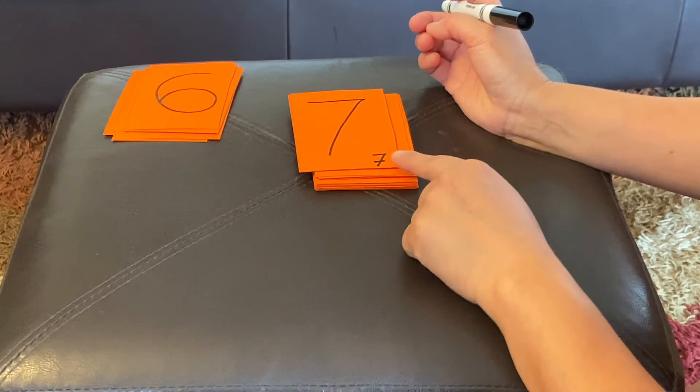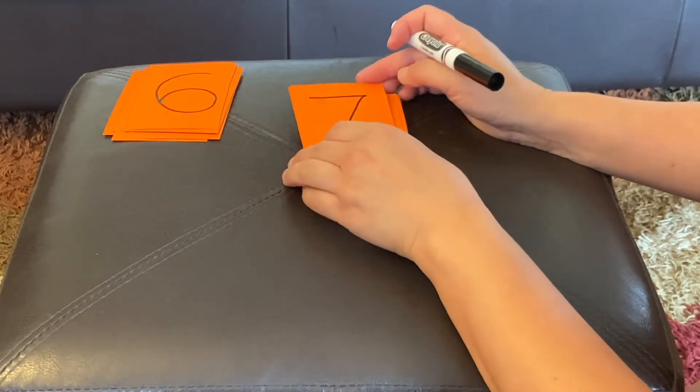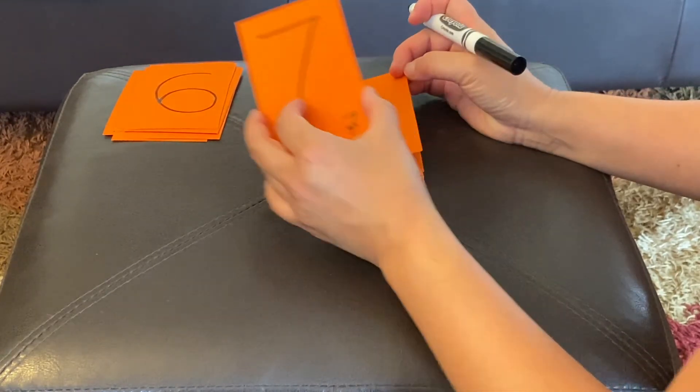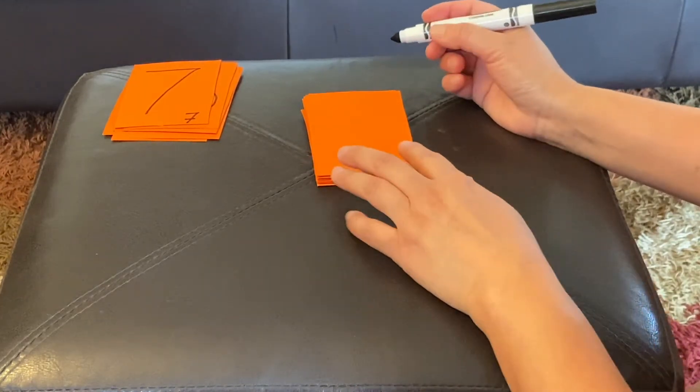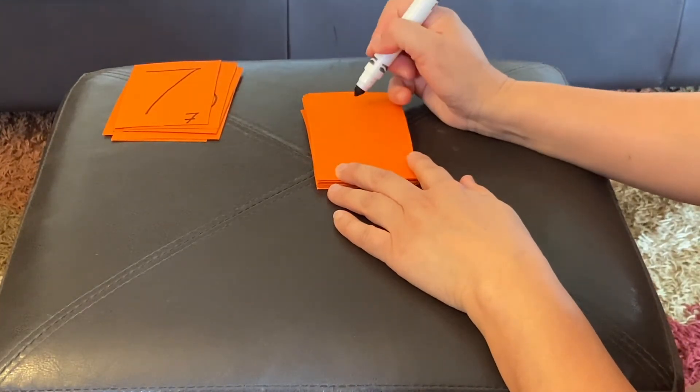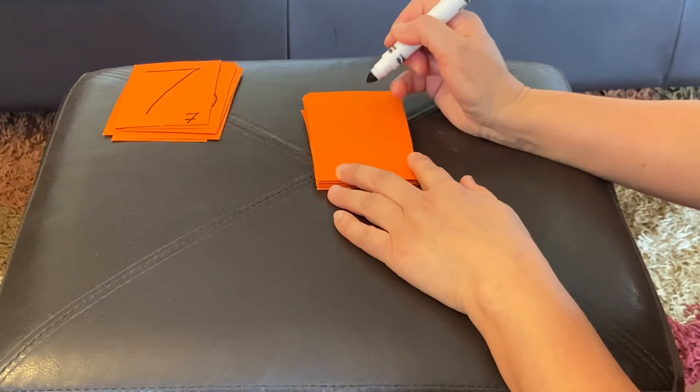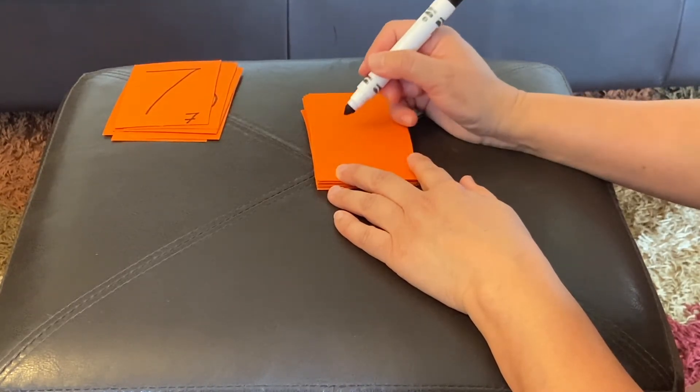Actually, when Miss Boo's not thinking, I write sevens like that. Eight. So, we can make an S, and then close the gate, or we can make two donuts.